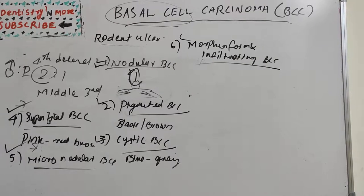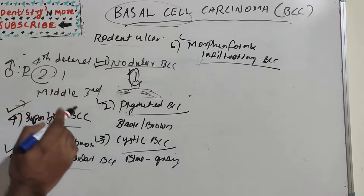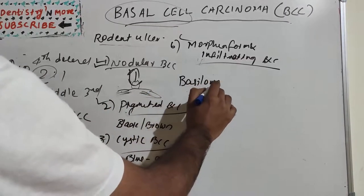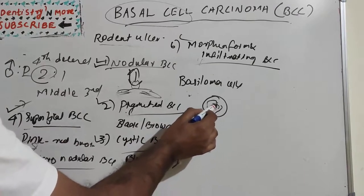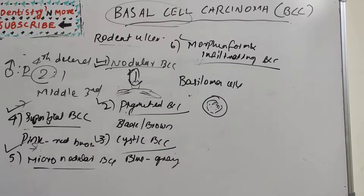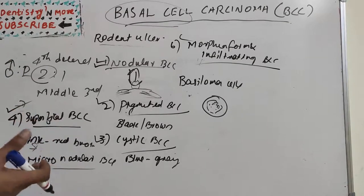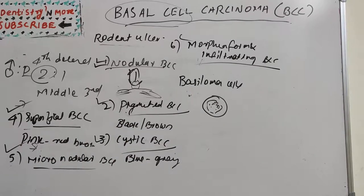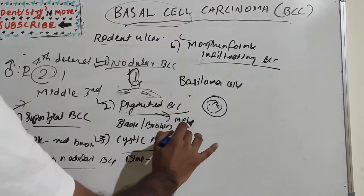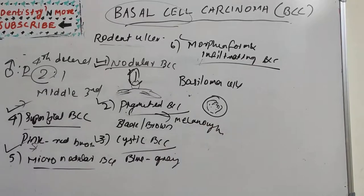Regarding histologic features: in the nodular and pigmented types, the tumor cells are called basaloma cells. These typically have large, oval, hyperchromatic nuclei with little cytoplasm, arranged in well-demarcated islands appearing to arise from the basal layer and invading into the underlying dermis. In the pigmented type, benign melanocytes in and around the tumor produce large amounts of melanin.